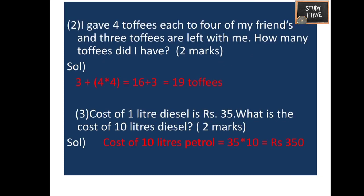I gave 4 toffees each to 4 of my friends and 3 toffees are left with me — how many toffees did I have? After giving 16 toffees to my friends I have 3 left, so 16 plus 3 is 19 toffees. Cost of 1 liter of diesel is 35 rupees — cost of 10 liters is 35 times 10, which is 350 rupees.